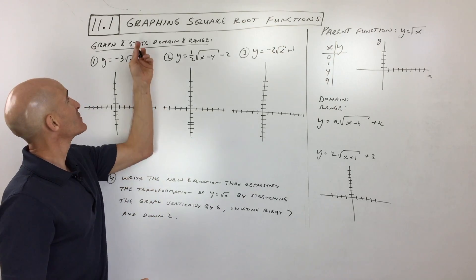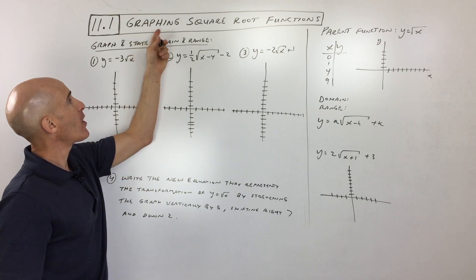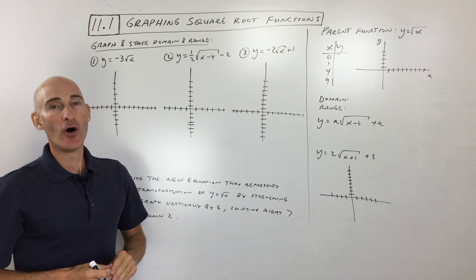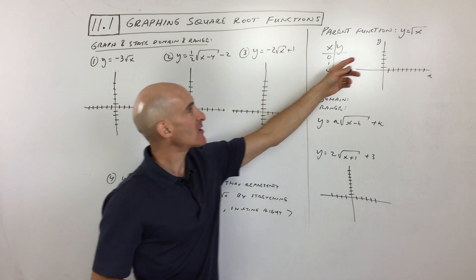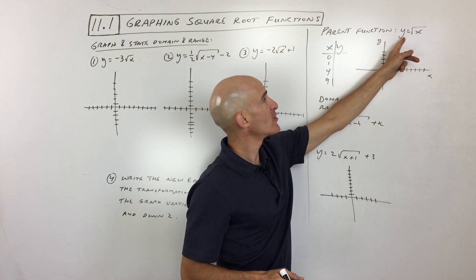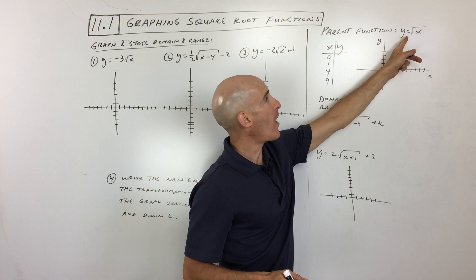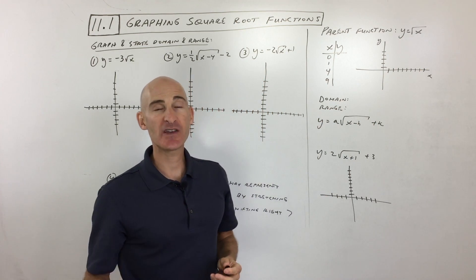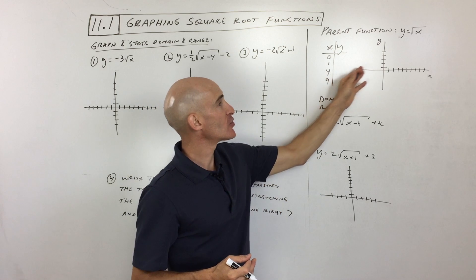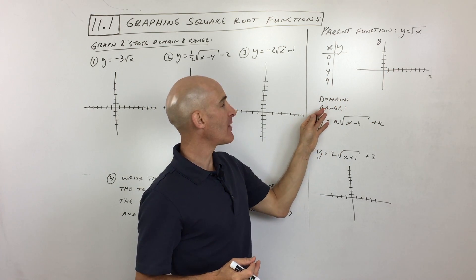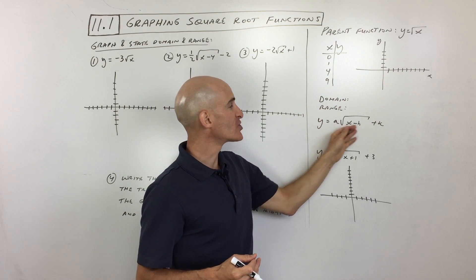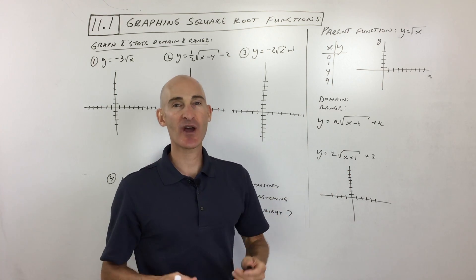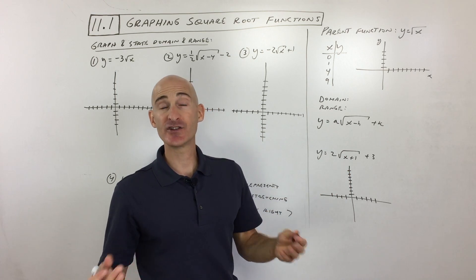Chapter 11, section 11.1 — we're going to talk about graphing square root functions. So what is a square root function? Well, we talked about square roots, but here what we're doing is graphing y equals square root of x. That's our parent function, that's our basic function. Let's show you how that graph looks, and then we're going to talk about a more general way of writing that equation and how to shift, stretch, and reflect the graph.